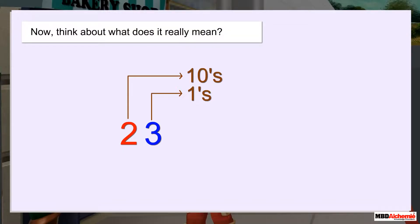Now, think about what does it really mean? If three is at the ones place, three literally represents three ones. It is actually one plus one plus one.